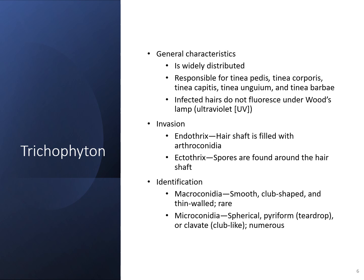They can also form on the outside of the hair shaft. When we identify these, we are looking for macroconidia. They are typically smooth with a club shape and have a thin wall. The Trichophytons do not typically have many macroconidia. The microconidia are spherical — they can be pyriform or teardrop shaped, and they can be club shaped — and there are usually a lot more of the microconidia.